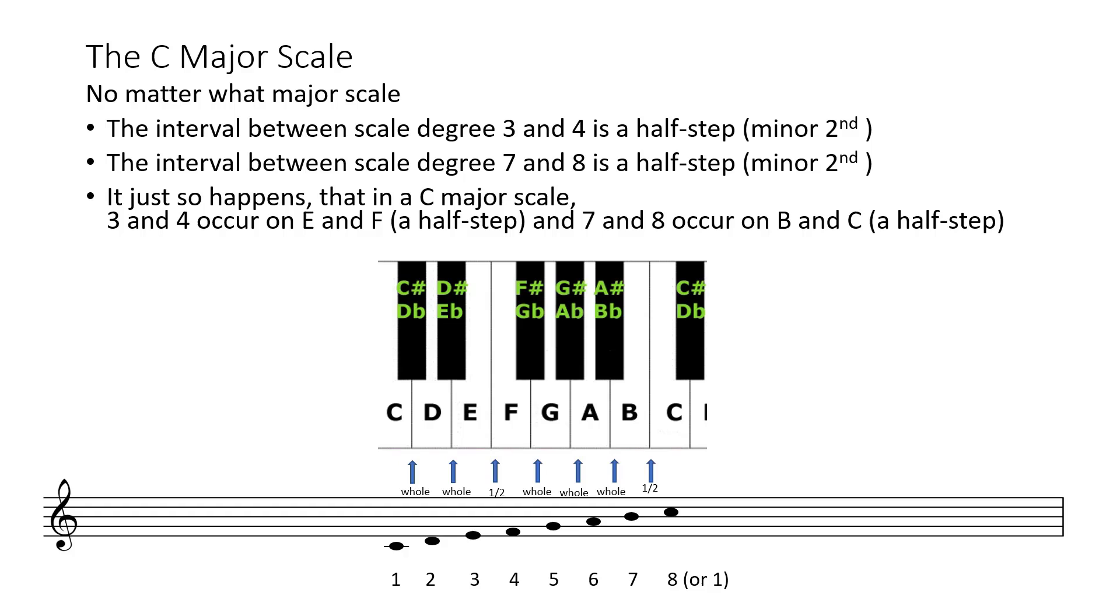Now, it just so happens that in a C major scale, 3 and 4 occur on E and F, a half step between them. Also, between 7 and 8, they occur in the C major scale on B and C, a half step.